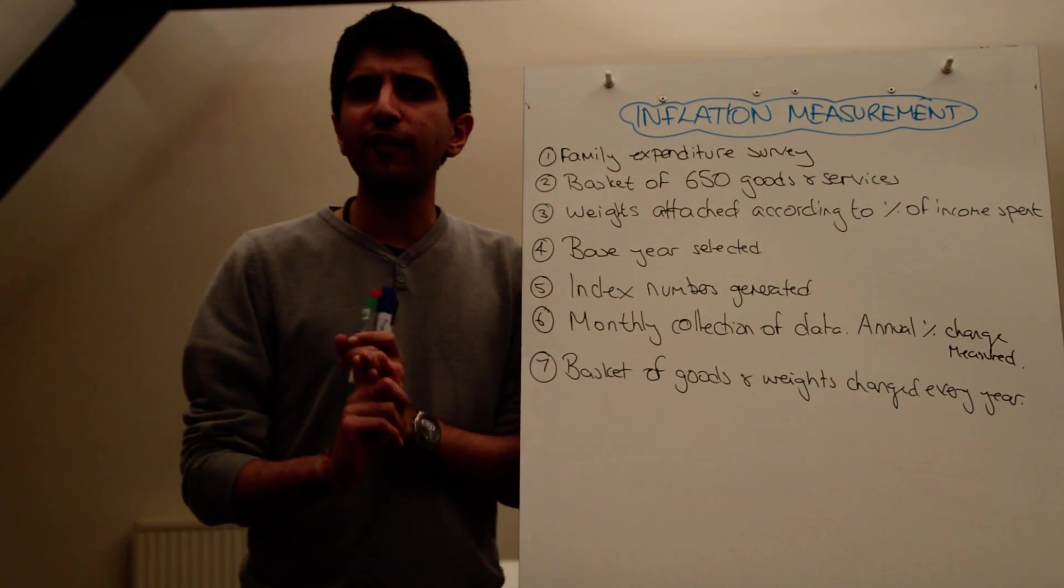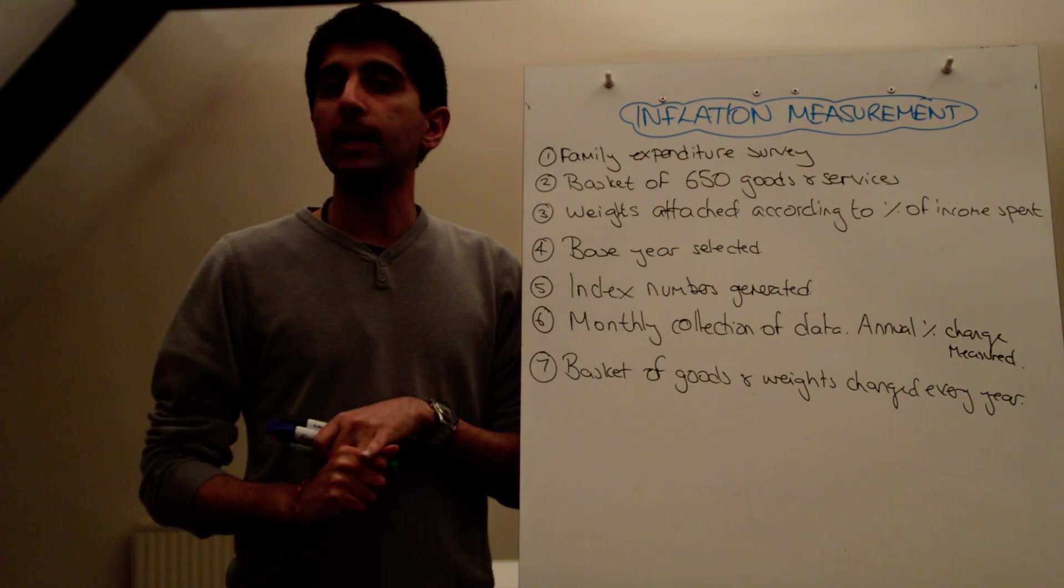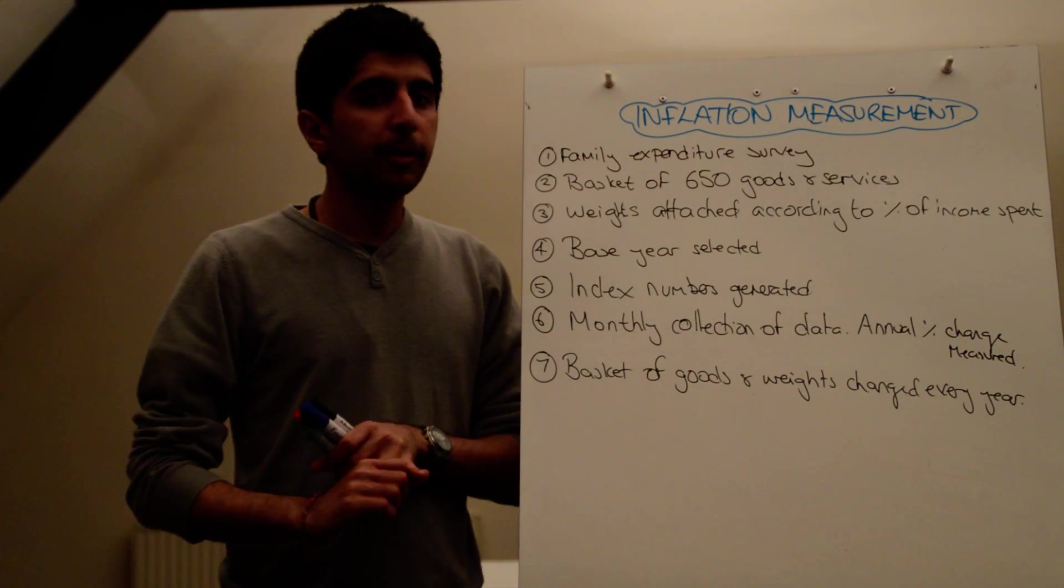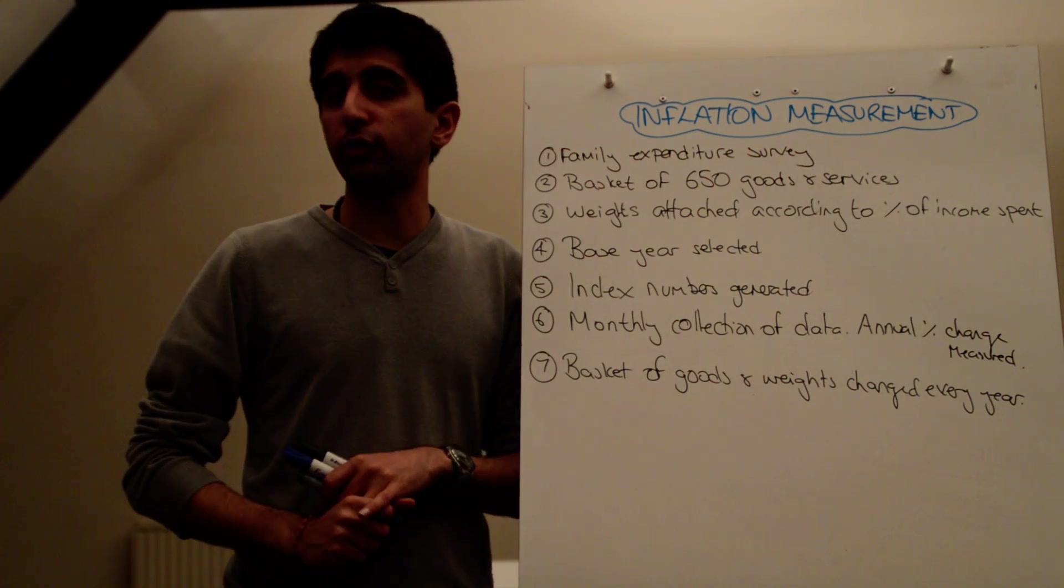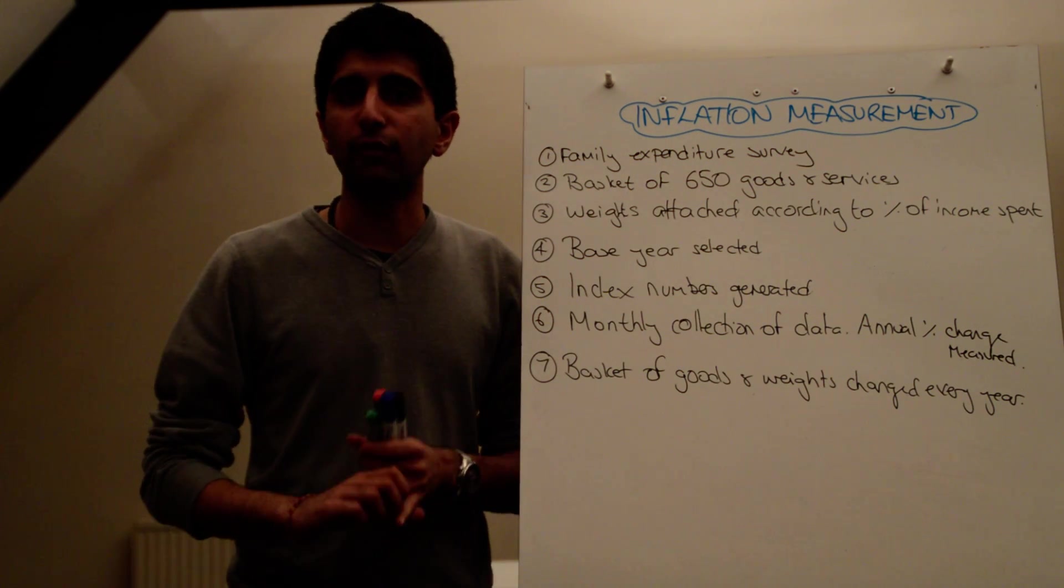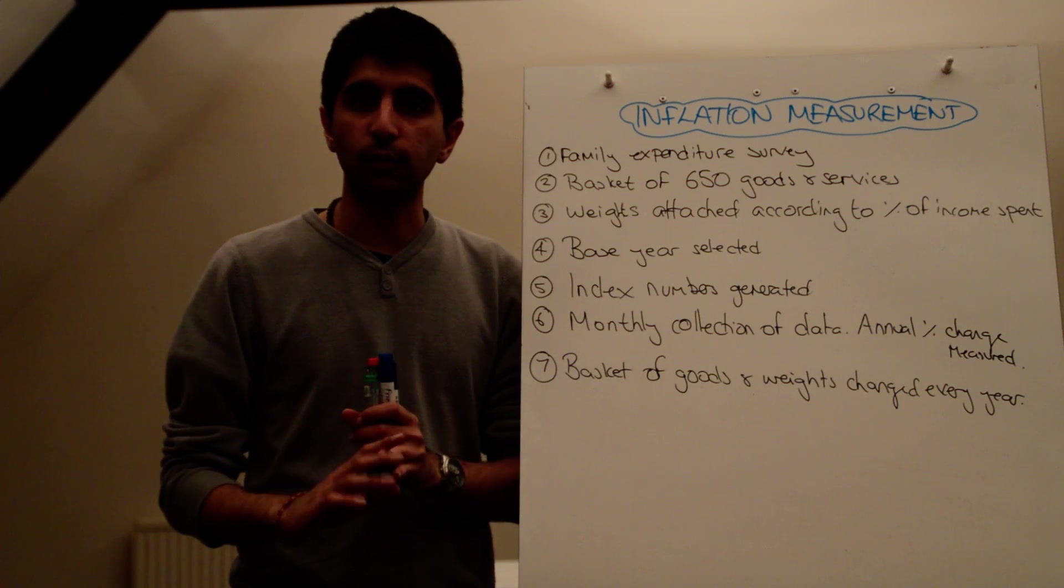Really, the RPI and the CPI are very similar, but the RPI just includes slightly more than the CPI. The RPI includes housing costs that the CPI doesn't, such as mortgage interest repayments, council tax and rent, for example, whereas the CPI does not include those things at all.